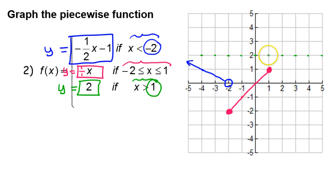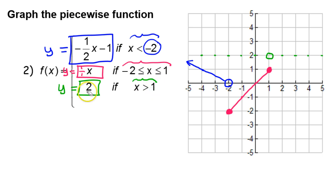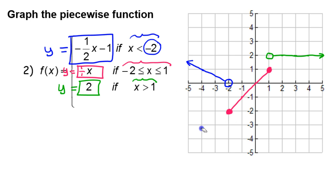Since it says greater than — not greater than or equal to — this should be an open circle, so I'll erase that dot and put an open circle. Since we use this function where x is greater than one, I draw the right side of the line. Then I erase the guide points, and there we have it — a complete graph of our piecewise function.